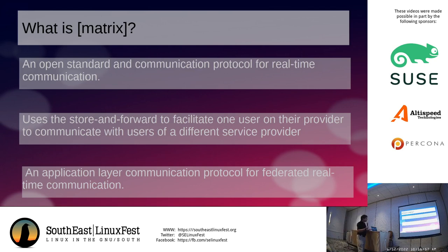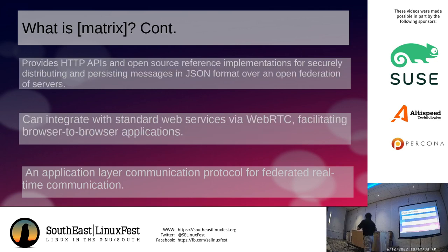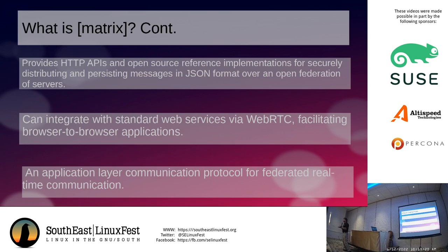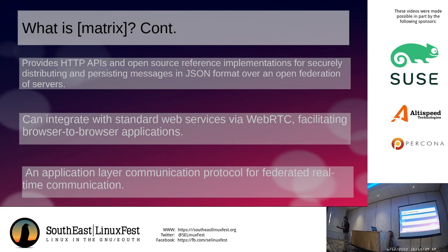Matrix is an application layer communication protocol for federated real-time communication — federated meaning it's able to go from one server to another, just like we do with email. Matrix provides an HTTP API and an open source reference implementation. We are not using anything terribly complex underneath; it's very well understood technology that's been around for a long time. It can integrate with standard web services like WebRTC, so voice calls and video calls are supported. It's all based on open source principles.